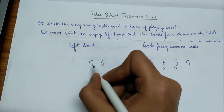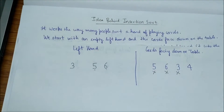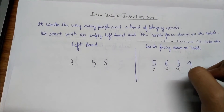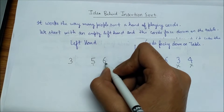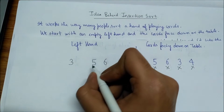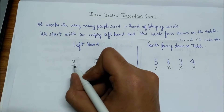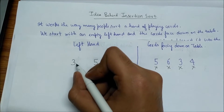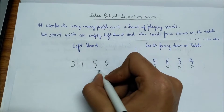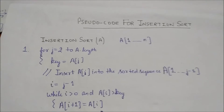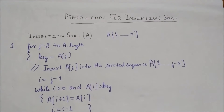Now we pick three and compare from right to left: three is less than six, and less than five, so three goes before five. Then we pick four and compare from right to left: four is less than six, less than five, but three is less than four, so four goes to the right of three. This is the idea behind insertion sort.